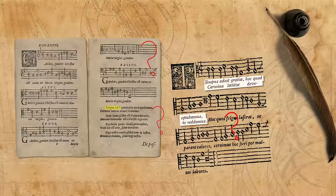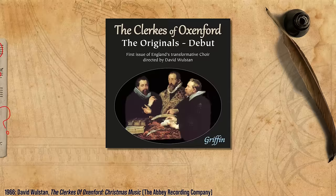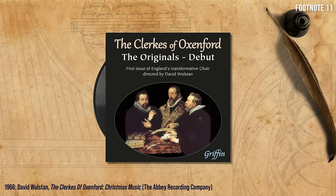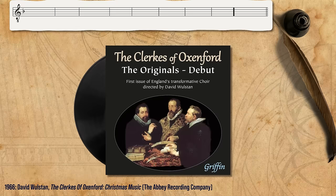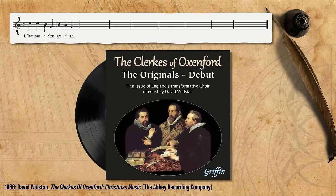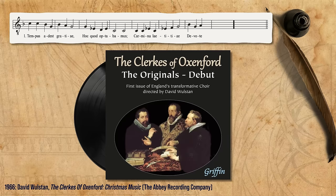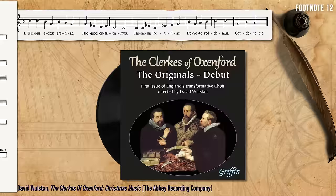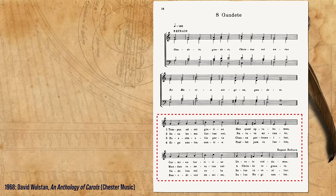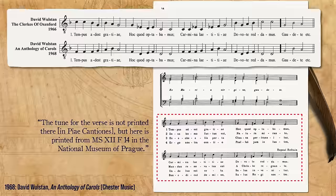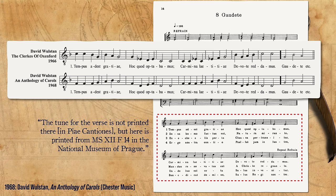The next time someone suggested a melody for the verse, as far as I can tell, was in 1966, when scholar and musician David Wolston recorded the piece with his group The Clerks of Oxenford. He naturally had to come up with some music for the verse. I don't know where he found this melody, but two years later he published an edition of Gaudete with another one. In the commentary, he only tells us that the melody is taken from a manuscript from Prague, without explaining how and why. Here are the two versions side by side, adjusted to G, the original key of Gaudete. This might suggest that he was unhappy with the first melody he chose for some reason.